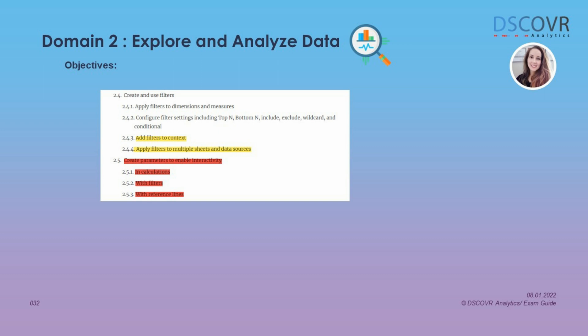Moving on to subsections 2.4 and 2.5. For 2.4, you should know how to apply filters to dimensions and measures, and how to configure filter settings to show the top number of products or customers for a given dimension. You should have a good understanding of how context filters work and how to change a dimension filter to a context filter. Make sure you review Tableau's order of operations table to understand how context filters are evaluated relative to dimension and measure filters. You should also be able to describe the steps to apply filters to multiple sheets and data sources.